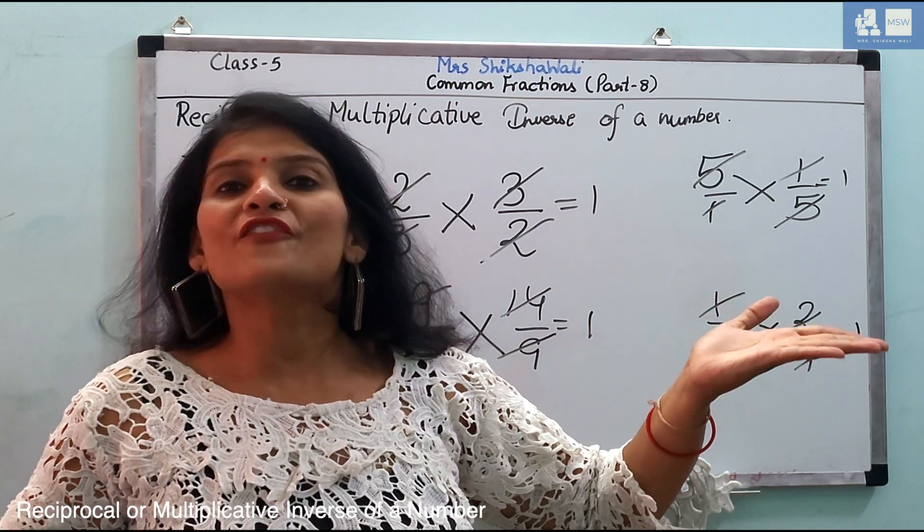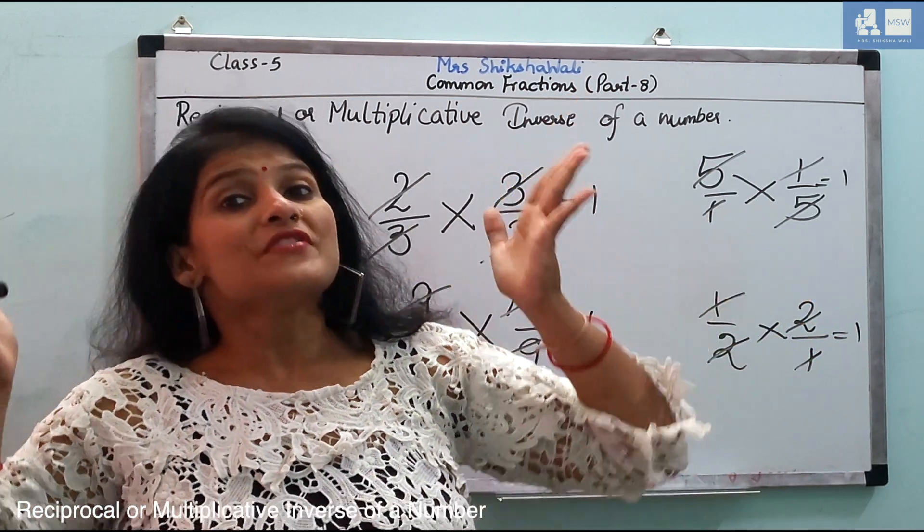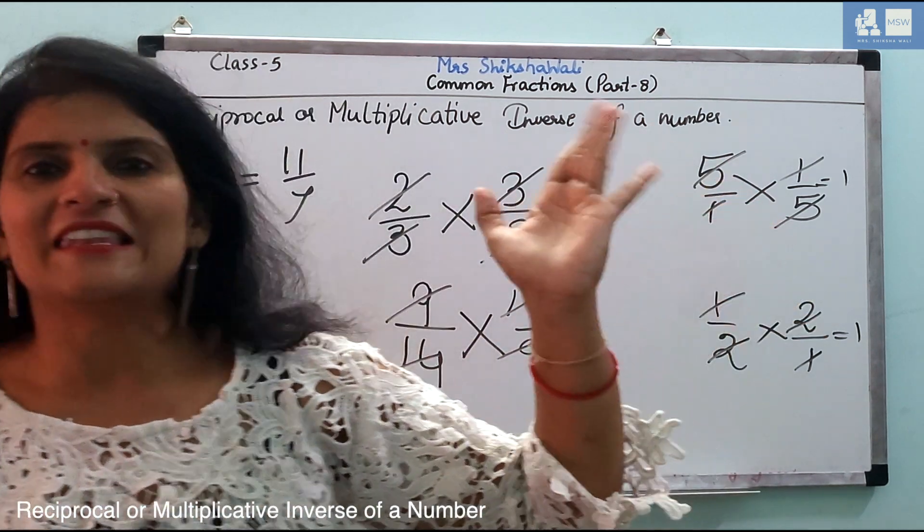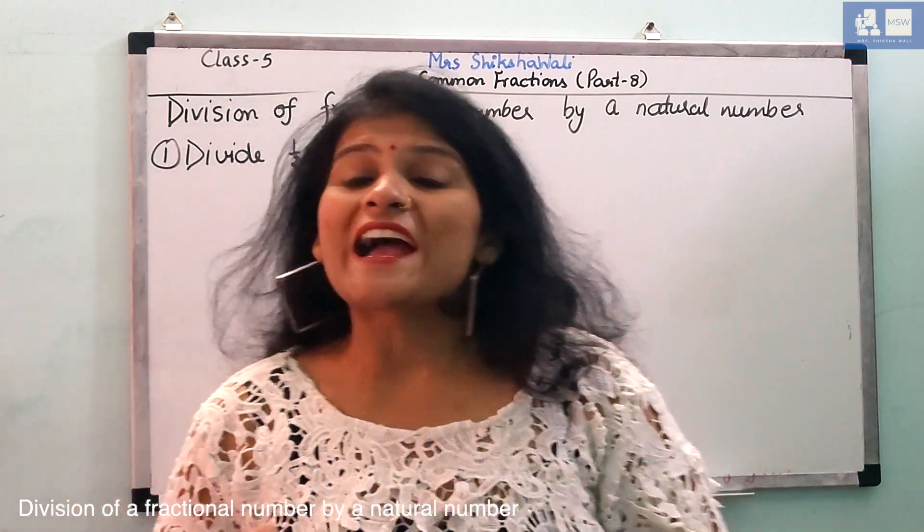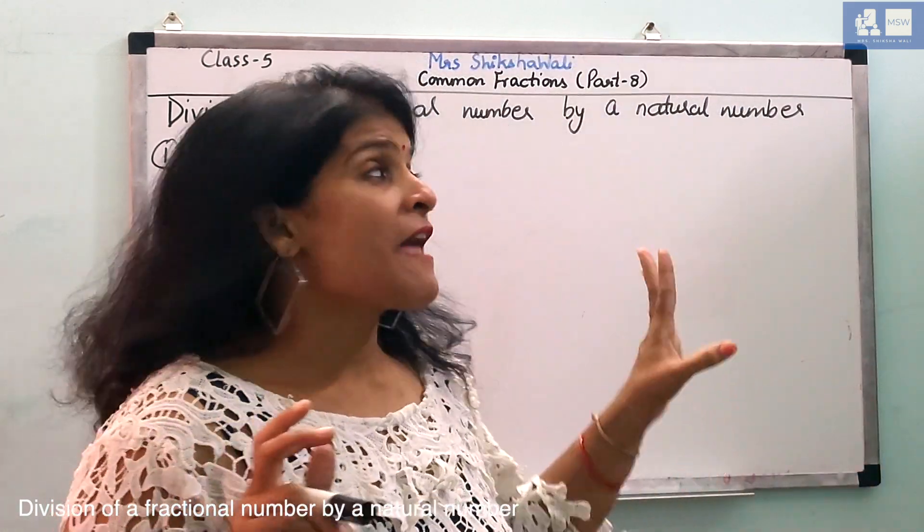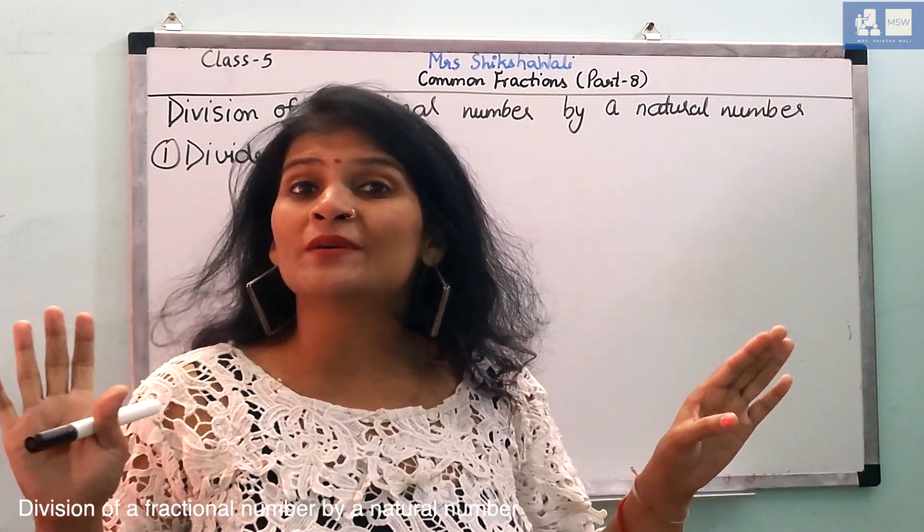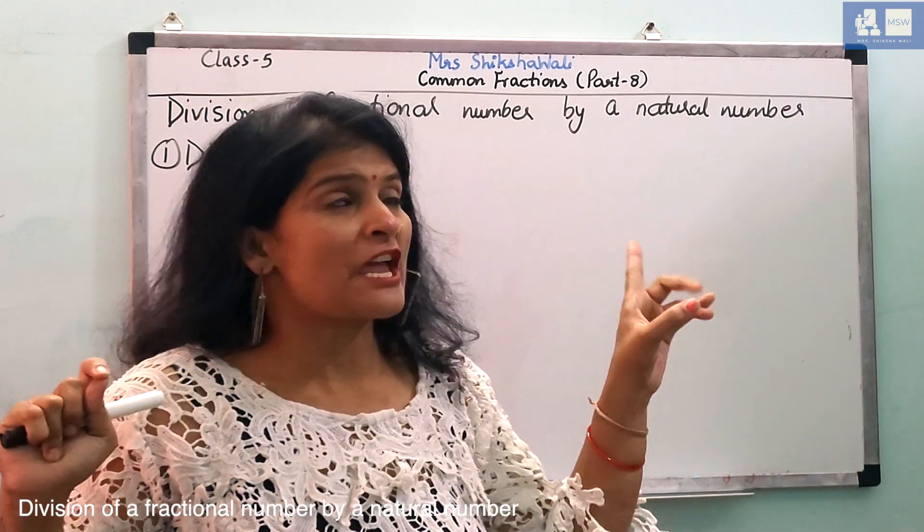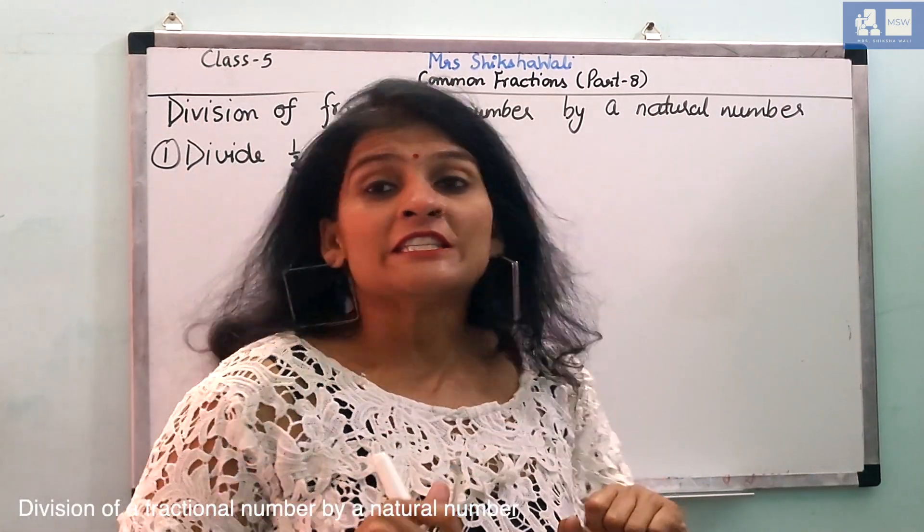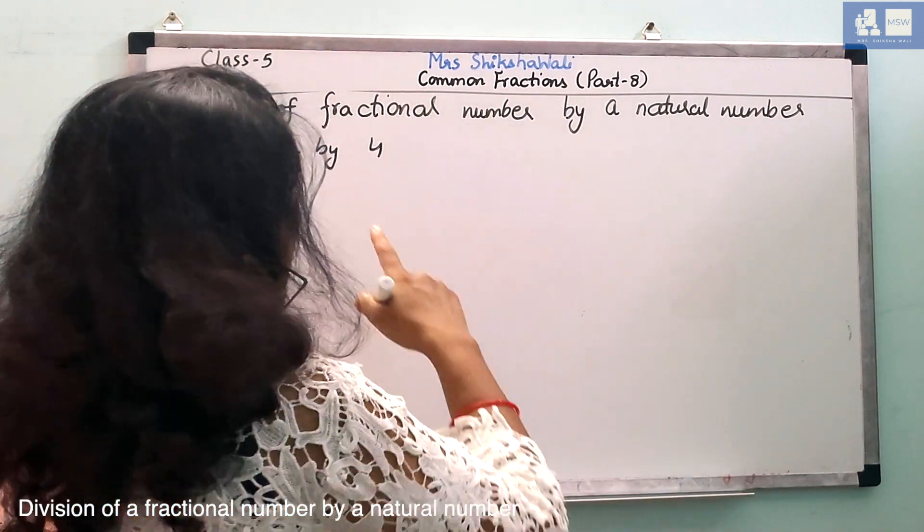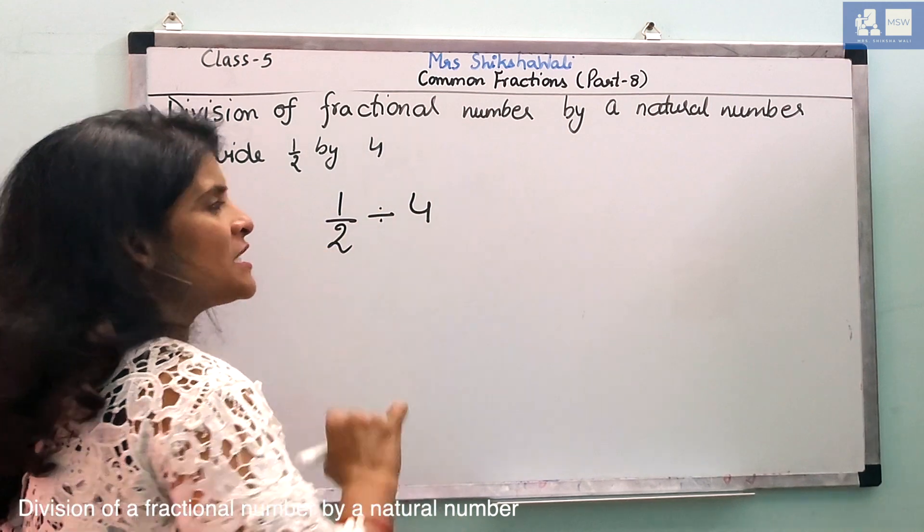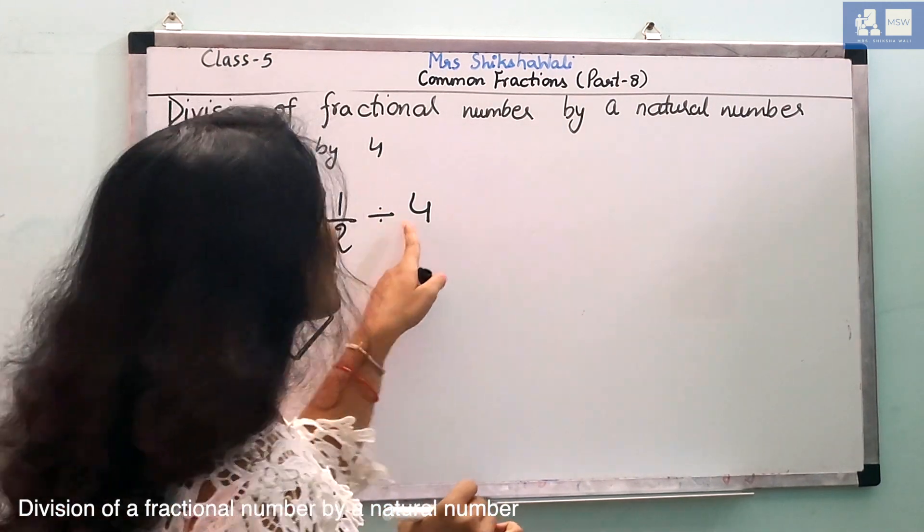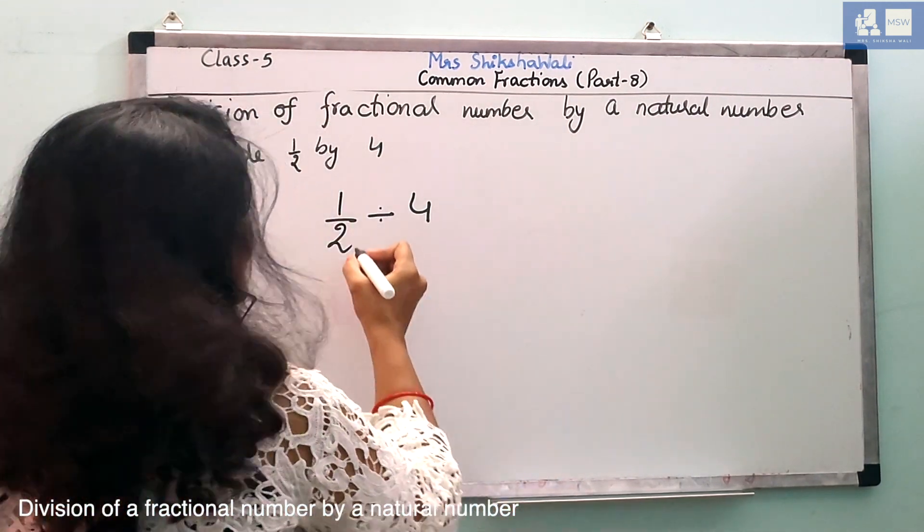Next part is division of a fractional number by natural number. Division of a fractional number by natural number. Natural number means all numbers except zero. Zero is not natural. Now, divide 1 by 2 by 4. 1 by 2 divided by 4.